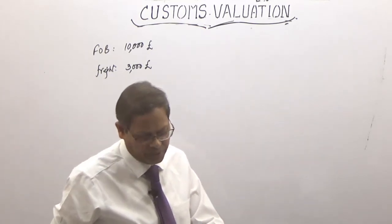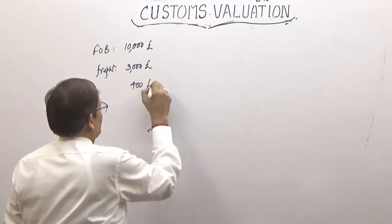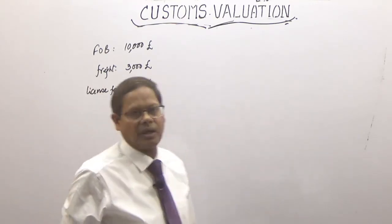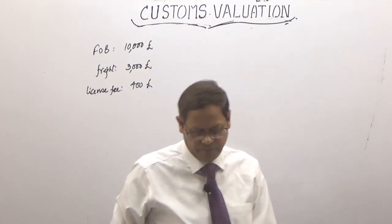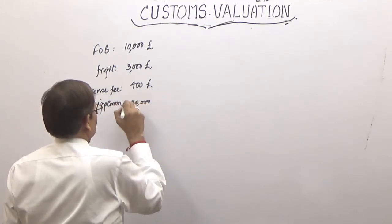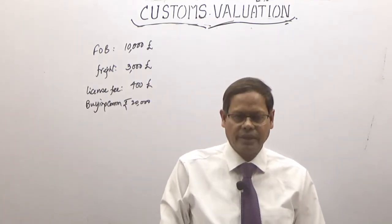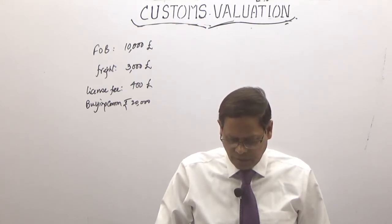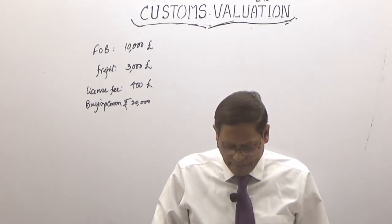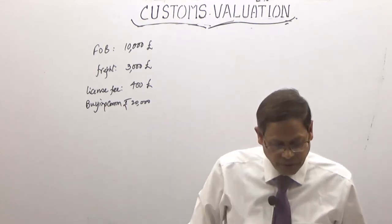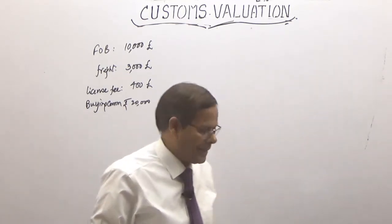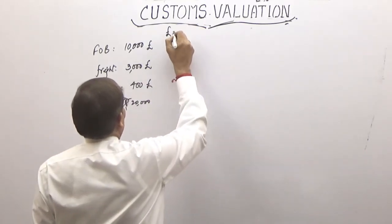License fee which the buyer is required to pay in the UK is £400 — since it is compulsory, it is a part of the value. IGST is 20%. Rate of duty is 10% basic customs duty. Exchange rate: 1 pound = ₹99, as notified by the CBC.